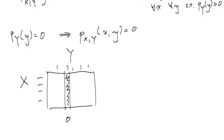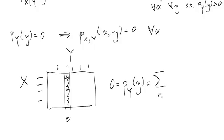So if P(Y)(little y) is equal to zero, then it means that P(X,Y)(little x, little y) is equal to zero for all X — everything in this column is zero. To say that in terms of equations: zero equals the probability that Y equals little y, which by marginalization equals a sum over little x of P(X,Y)(little x, little y). So if this sum is zero, and since these are all non-negative, it implies that each term has to be equal to zero.